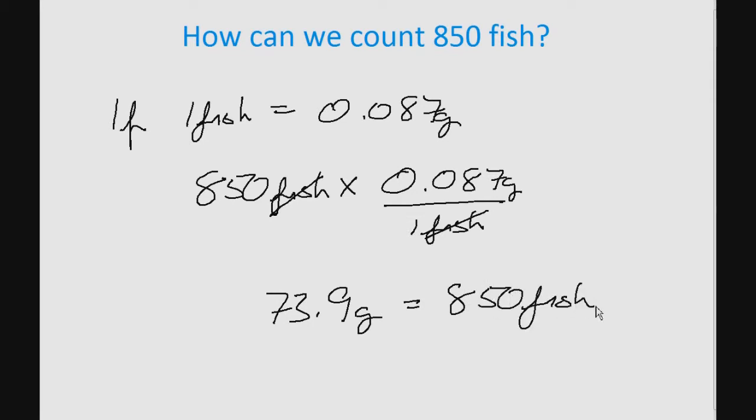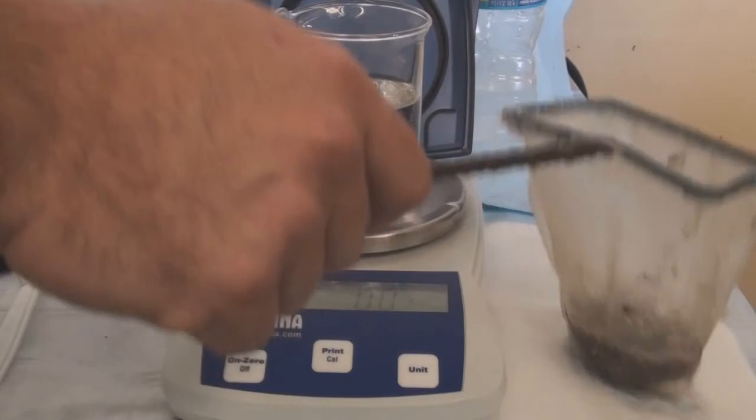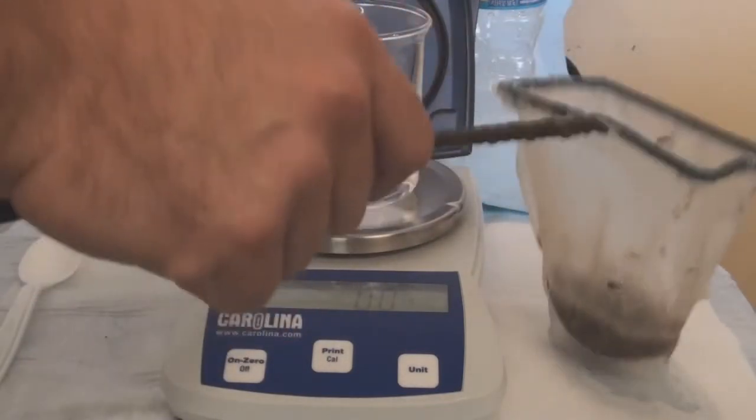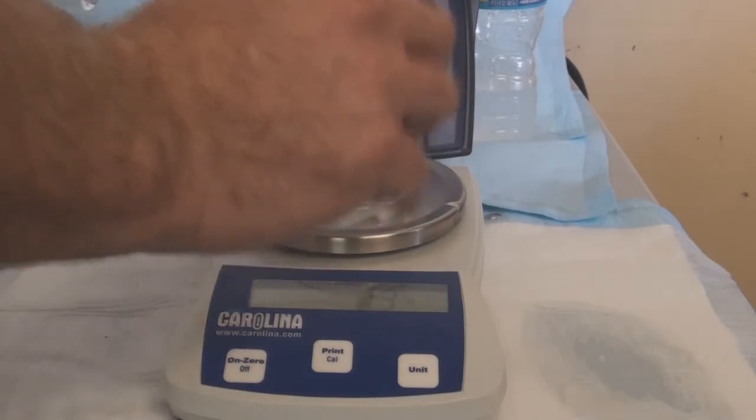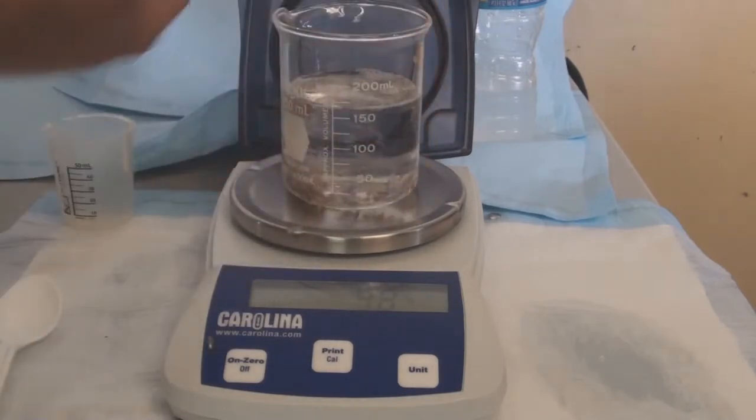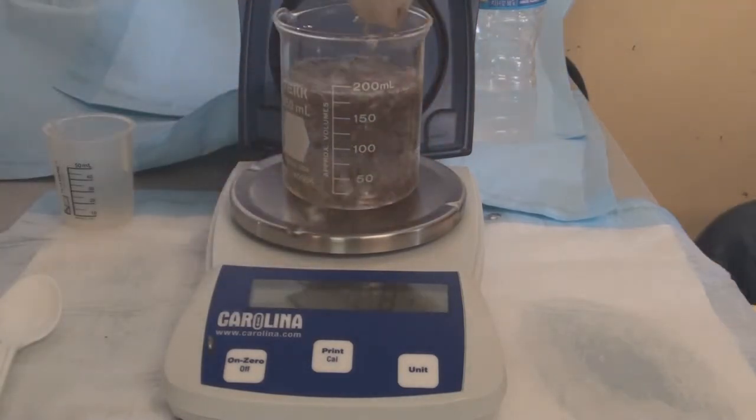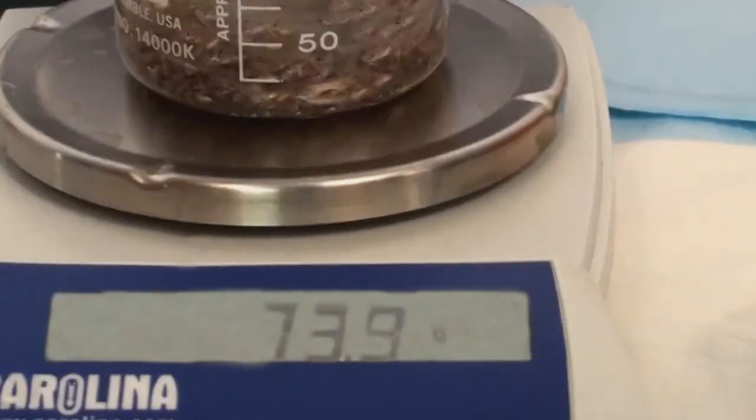Back in the hatchery, the hatchery manager will once again set up a beaker of water on a scale and zero out the weight. The manager will then add fish to the beaker, being careful to only add fish and no extra water until the scale reads 73.9 grams.